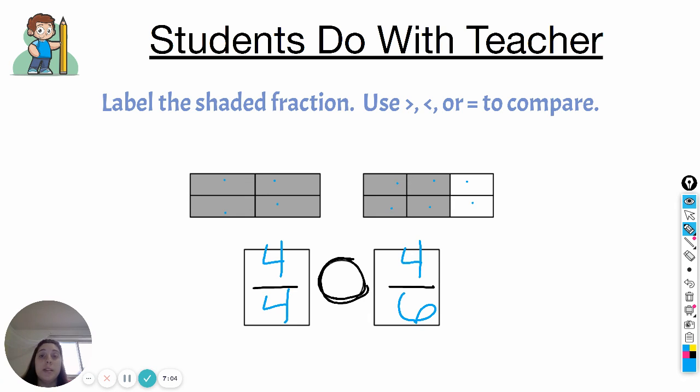Which one takes up more space? Well, we know that four fourths is one whole. This whole shape is covered. With this shape, the whole thing is not covered, so we already know that this one is bigger, so the alligator is going to eat that way. So four fourths is greater than four sixths.